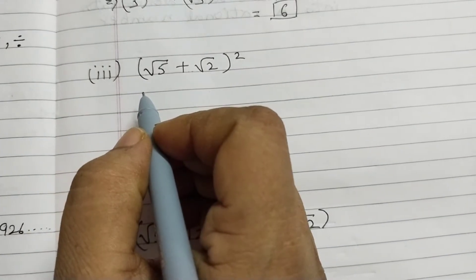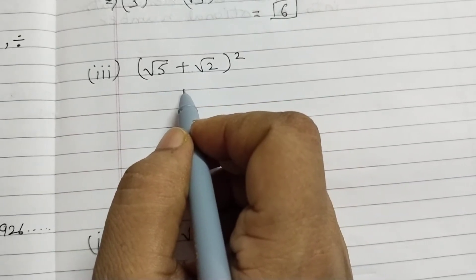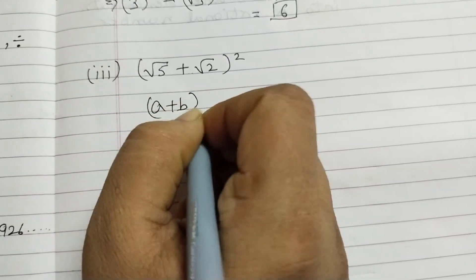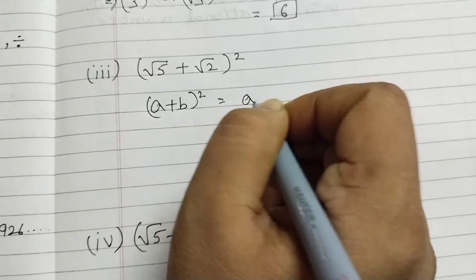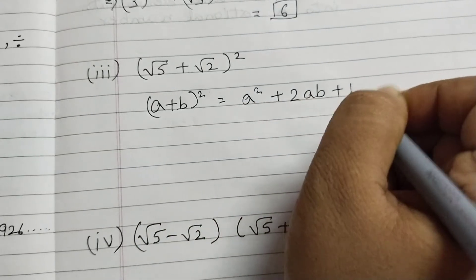Question number 3, square root of 5 plus square root of 2, the whole squared. Here again we can use identity and that is a plus b the whole squared equals a squared plus 2ab plus b squared.